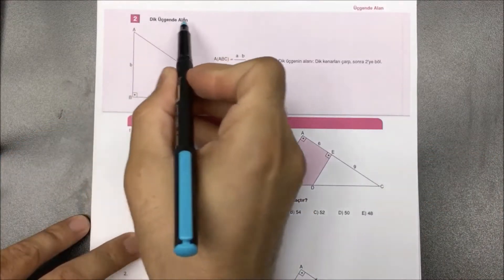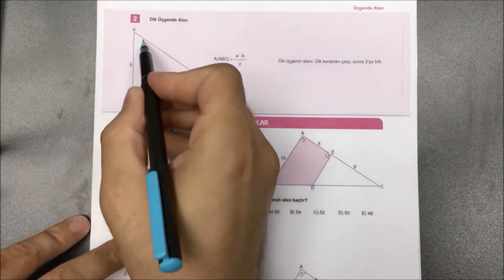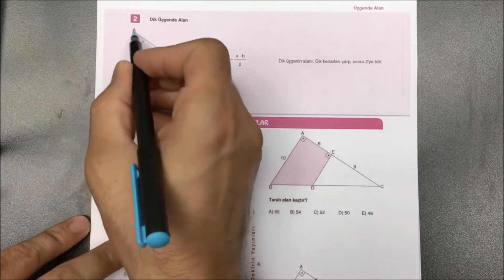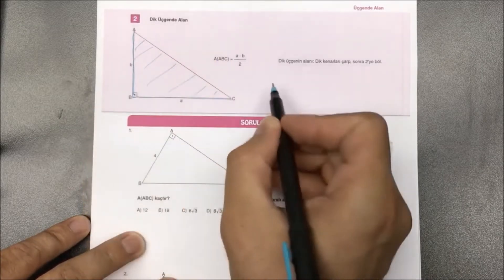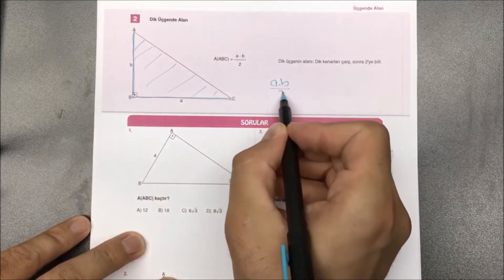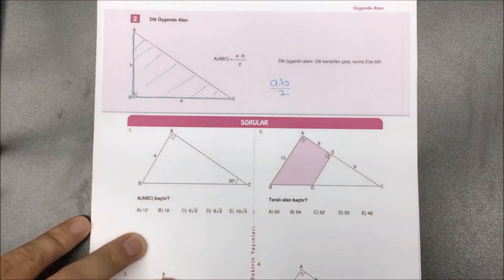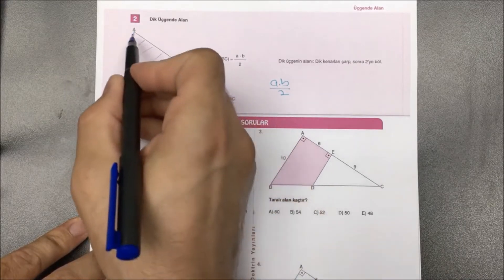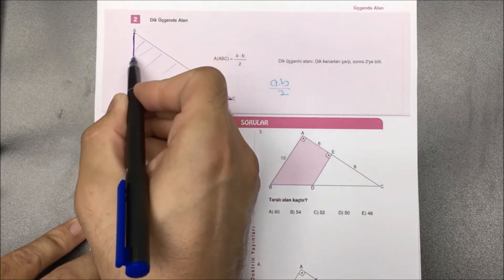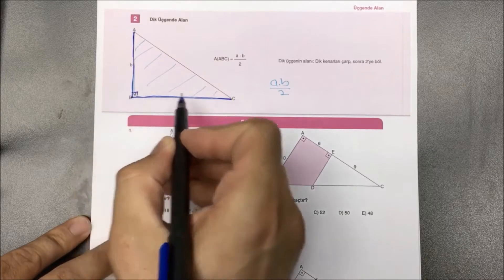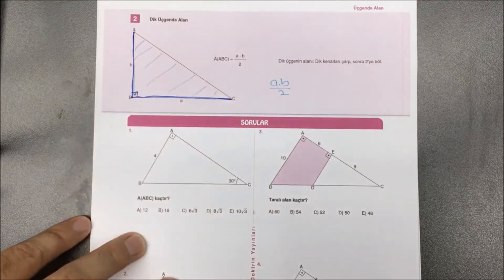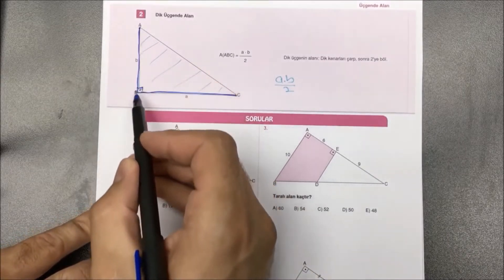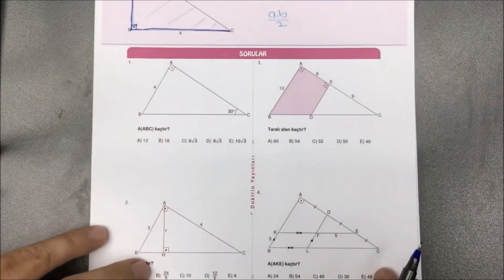İkinci türümüzdeyiz: dik üçgenlerde alan. Dik üçgenlerin alanları dik kenarlarının çarpımı bölü 2 ile bulunur. Taban uzunlukları A ve B olduğuna göre A çarpı B bölü 2 diyebiliriz. Bu da taban çarpı yükseklik bölü 2'ye uygundur. Pratik olarak söyleyecek olursak: dik üçgenlerin alanları dik kenarları çarpıp 2'ye böleceğiz.